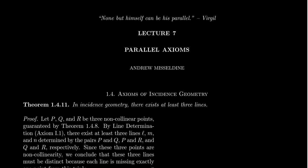Lecture 7 has two main goals. The first is to finish developing the theory of incidence geometry, which we began in Lecture 6. The second half is that we're going to introduce the so-called parallel axioms and parallel postulates. That discussion will actually take place in the second video for Lecture 7. This first one is just developing the theory of incidence geometry.